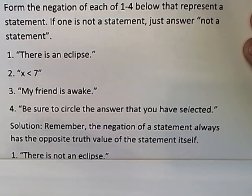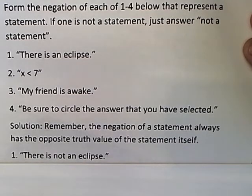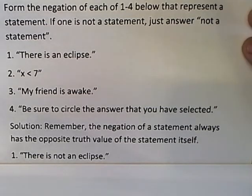So looking at the first one, there is not an eclipse would have the exact opposite truth value. If there is an eclipse, that would be true. There is not an eclipse would be false at that point. If there's not an eclipse, the original statement would be false and the negation would be true. So that is a perfect example of a negation.